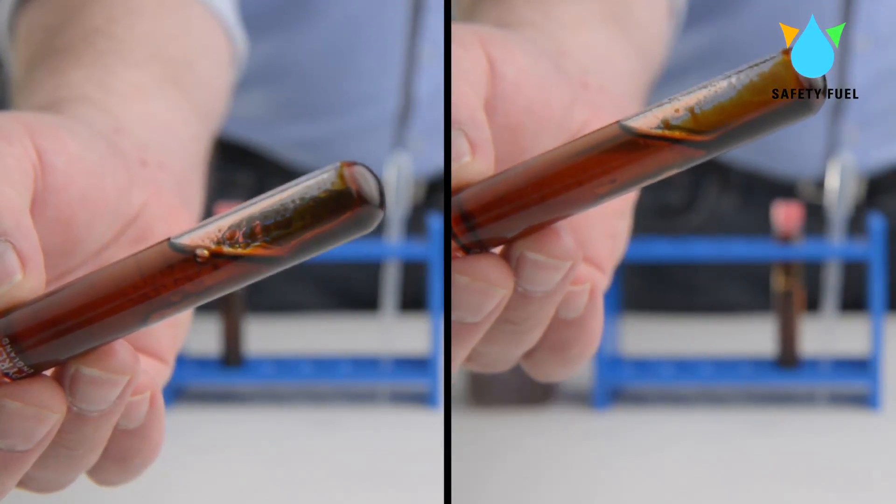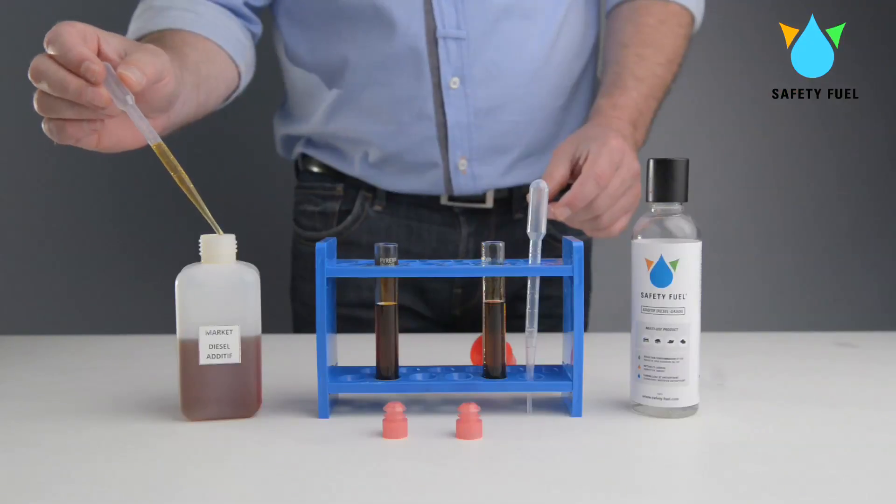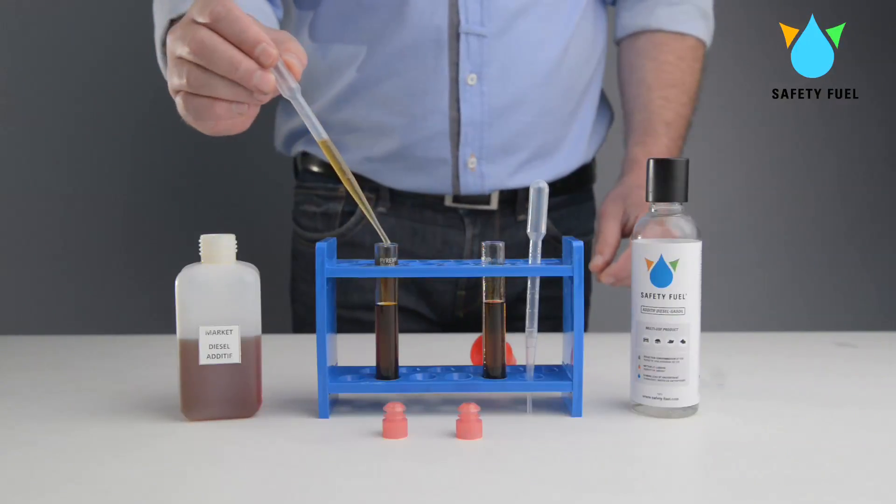These black deposits and varnishes can also be retrieved in the engine and on the injectors, the DPF particle filter, the EGR valve and the exhaust system. We add a traditional market additive in one test tube.